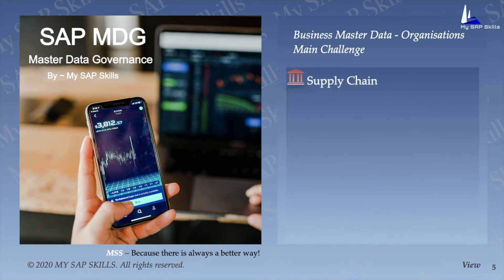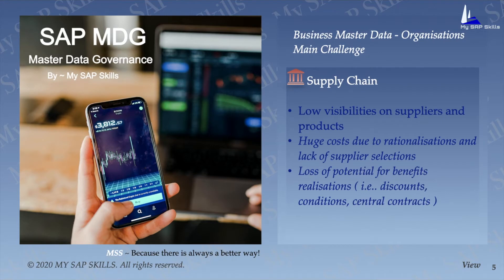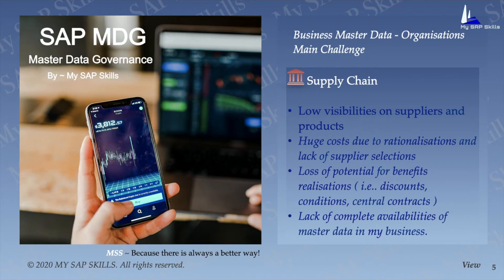In the supply chain and planning system, low visibility on suppliers and products is a main concern. They certainly face huge costs due to rationalization and lack of supplier selection. Loss of potential for benefit realization like discounts, conditions, and central contracts, along with lack of complete availability of master data, put supply chain and planning management at greater risk.